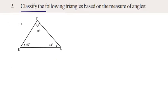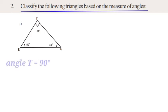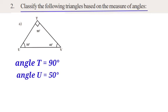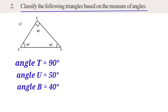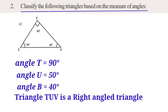Classify the following triangles based on the measure of the angles. Observe triangle TUV. In this triangle, angle T is equal to 90 degrees, angle U is equal to 50 degrees, angle V is equal to 40 degrees. Since one angle equals 90 degrees, the type of triangle is called a Right Angle Triangle.